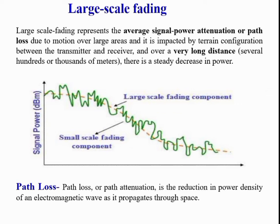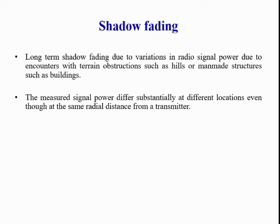Moving to the different types of large scale fading — the first is path loss. Path loss or path attenuation is the reduction in power density of an electromagnetic wave as it propagates through space. The mathematical formula for path loss in dB is: path loss = 20 log₁₀(4πd / λ), where d is the distance between the transmitter and receiver and λ is the wavelength of the electromagnetic wave transmitted.